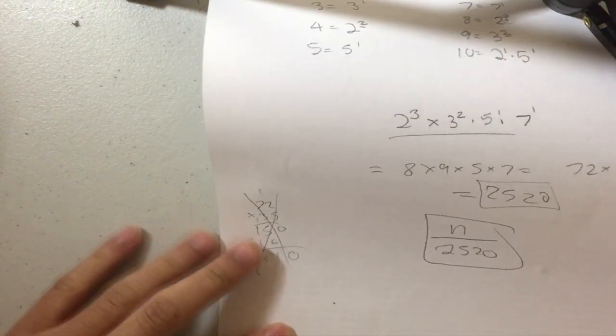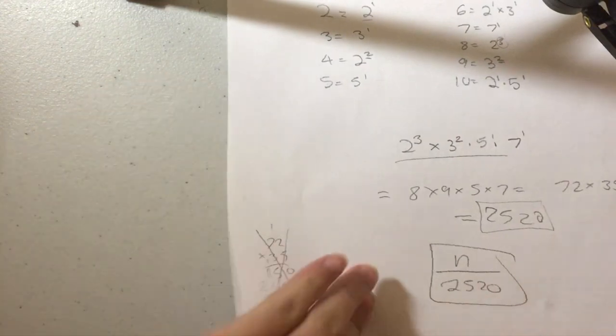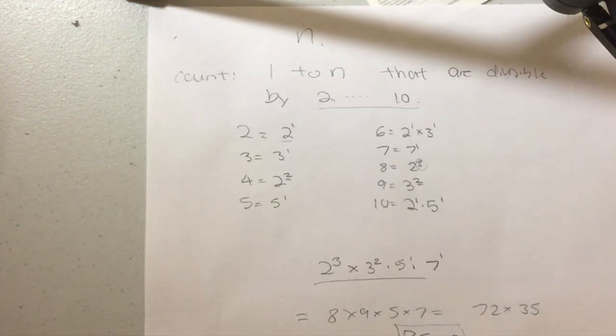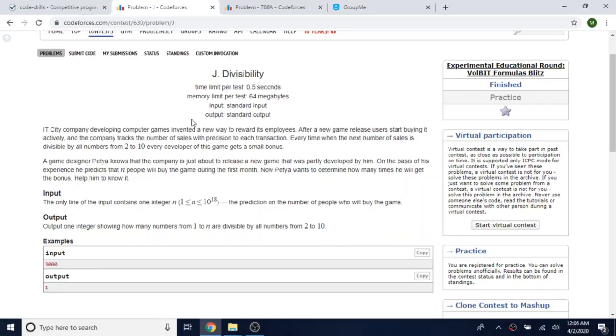And yeah, that's basically the answer. So yeah, this is a short video. All you gotta do is just code up cout n over 2520, submit your answer, and then that's it.